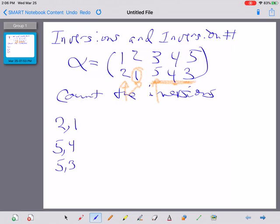And finally, so now we move on to the 4. And of course, 4 and 3 is in the wrong order. So 4 and 3 is also an inversion.